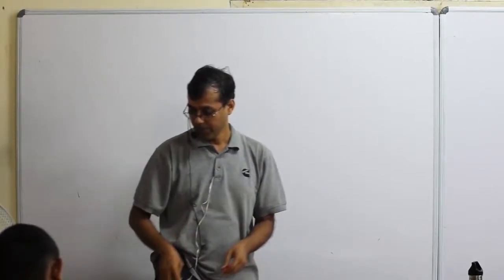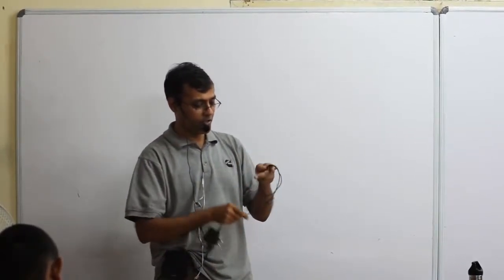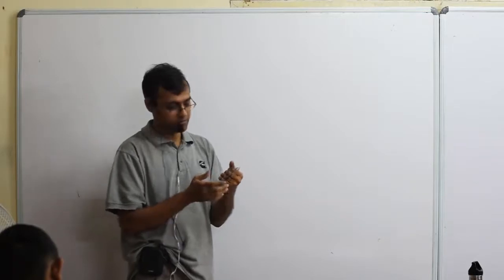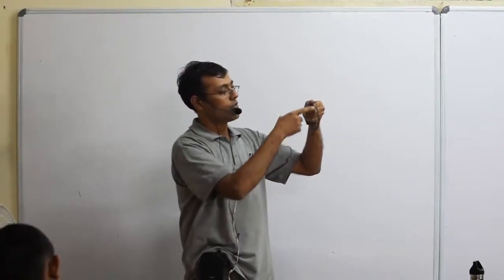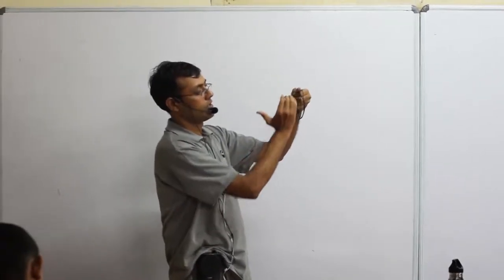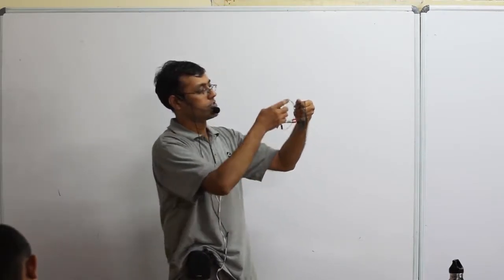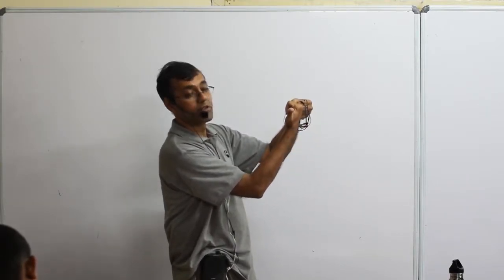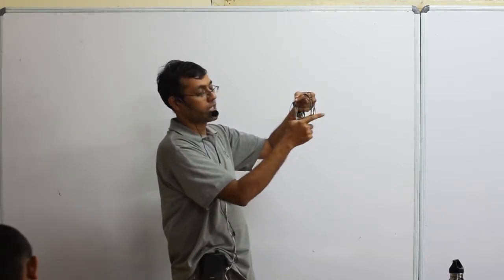Since it is 3D you have to think a lot — it is not as easy as the 2D problems. Imagine this is one loop and the other loop is like this. If I take this loop, which way is the magnetic field? The current is flowing like this, so the magnetic field is like this. For another loop perpendicular to this, if the current is going like this, the magnetic field is this way.